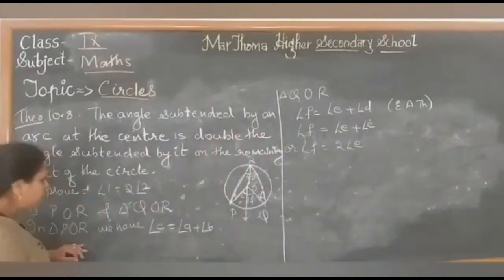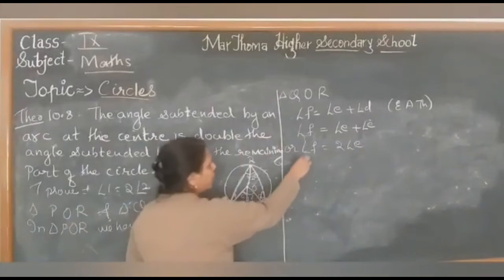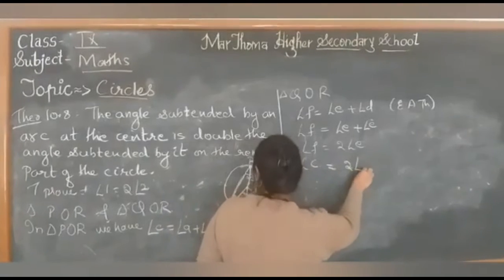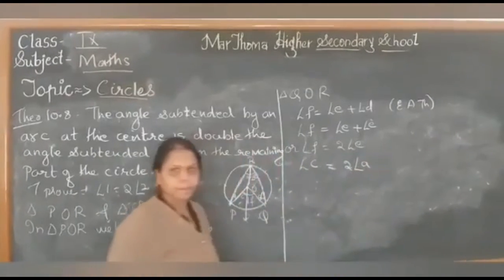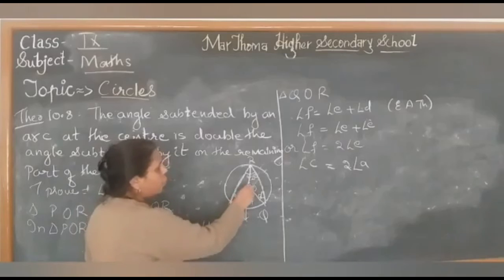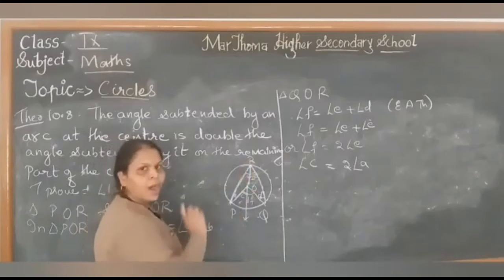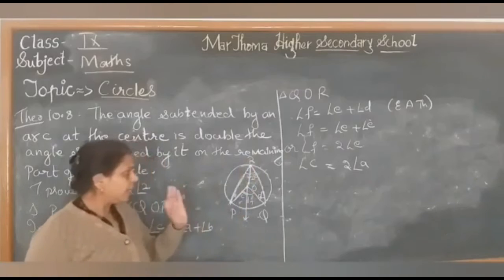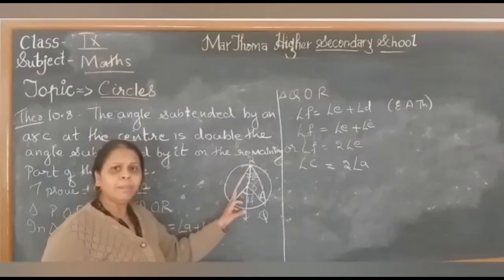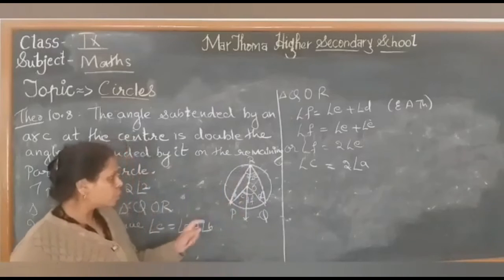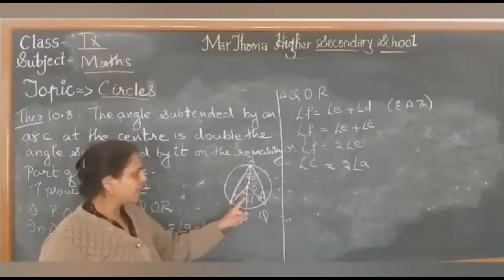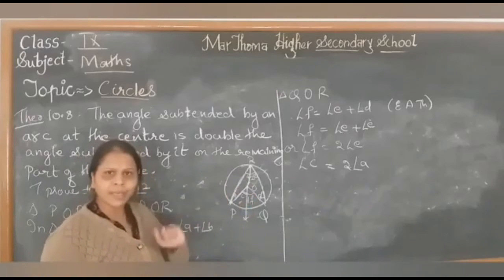Similarly, angle C equals 2 times angle A. Why? Because in triangle POR, OP and OR are radii, so the sides are equal and the respective angles A and B are equal. Therefore, angle C is twice angle A. So we have angle F is twice angle E and angle C is twice angle A.